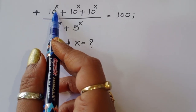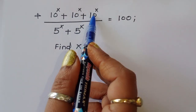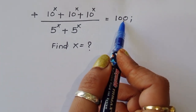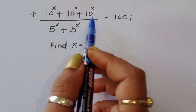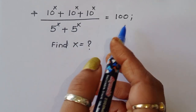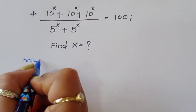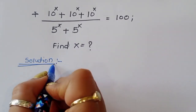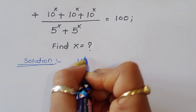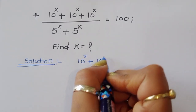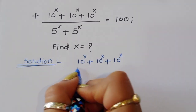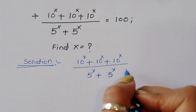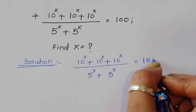The question is: 10^x plus 10^x plus 10^x, divided by 5^x plus 5^x, is equal to 100. We have to find the value of x.